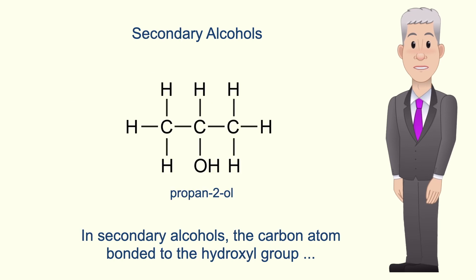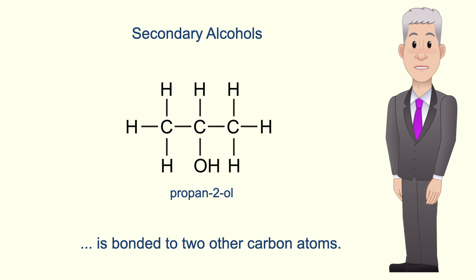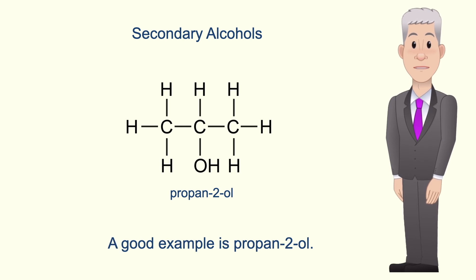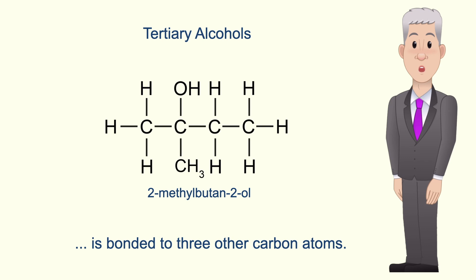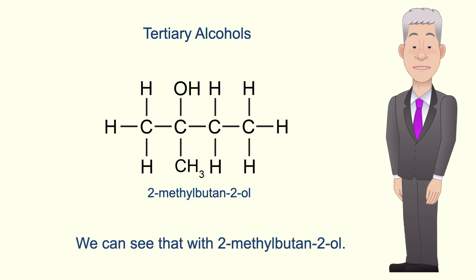In secondary alcohols the carbon atom bonded to the hydroxyl group is bonded to two other carbon atoms, and a good example is propan-2-ol. And finally in tertiary alcohols the carbon atom bonded to the hydroxyl group is bonded to three other carbon atoms, and we can see that with 2-methylbutan-2-ol.